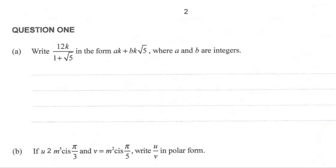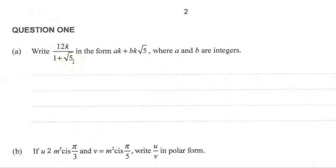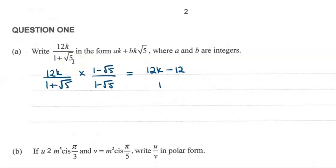Okay, for question one, we want to take this number and rewrite it in the form that looks like this. The key thing here, whenever you've got anything with complex numbers that are on the bottom of a fraction, you're always going to need to rationalize the denominator.